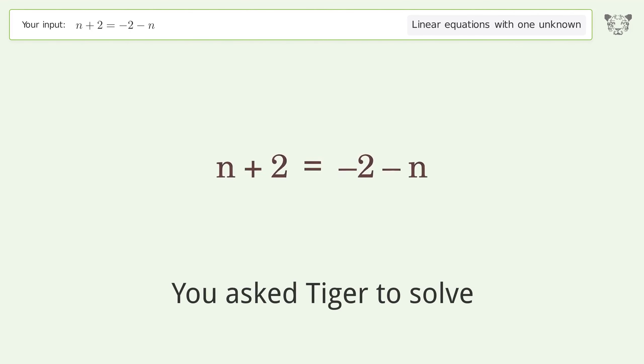You asked Tiger to solve. This deals with linear equations with one unknown. The final result is n equals negative 2.